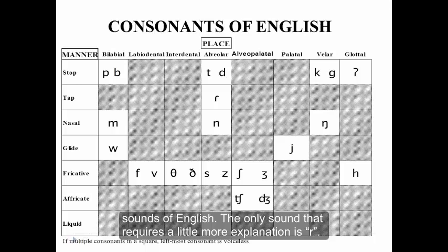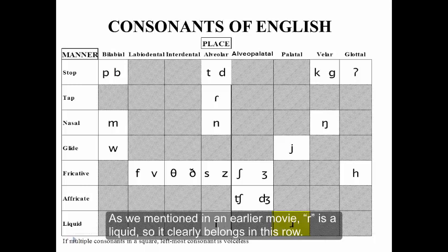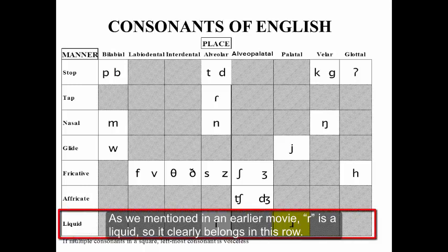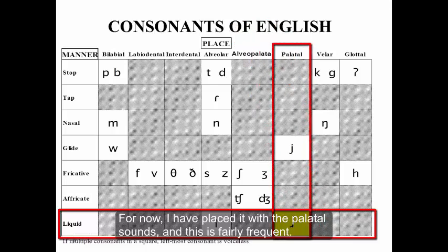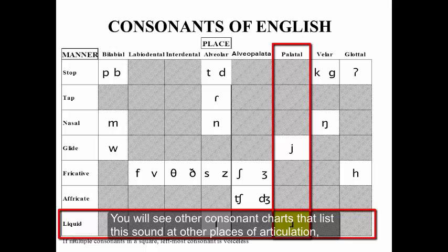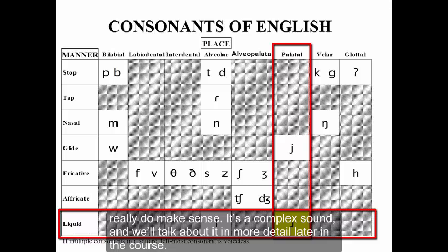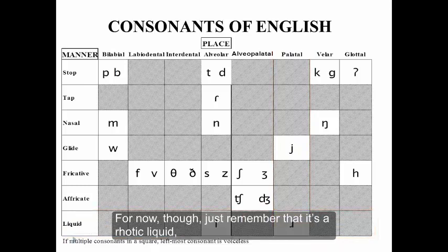The only sound that requires a little more explanation is 'ur'. As we mentioned in an earlier movie, ur is a liquid, so it clearly belongs in this row. However, what place ur is produced at is a complex question. For now, I've placed it with the palatal sounds, and this is fairly common. You'll see other consonant charts that list this sound at other places of articulation. In fact, the tongue position for ur is such that a few different places of articulation really do make sense. It's a complex sound, and we'll talk about it in more detail later in the course. For now, just remember that it's a rhotic liquid, and I won't ever ask you the place of articulation for ur on a test.